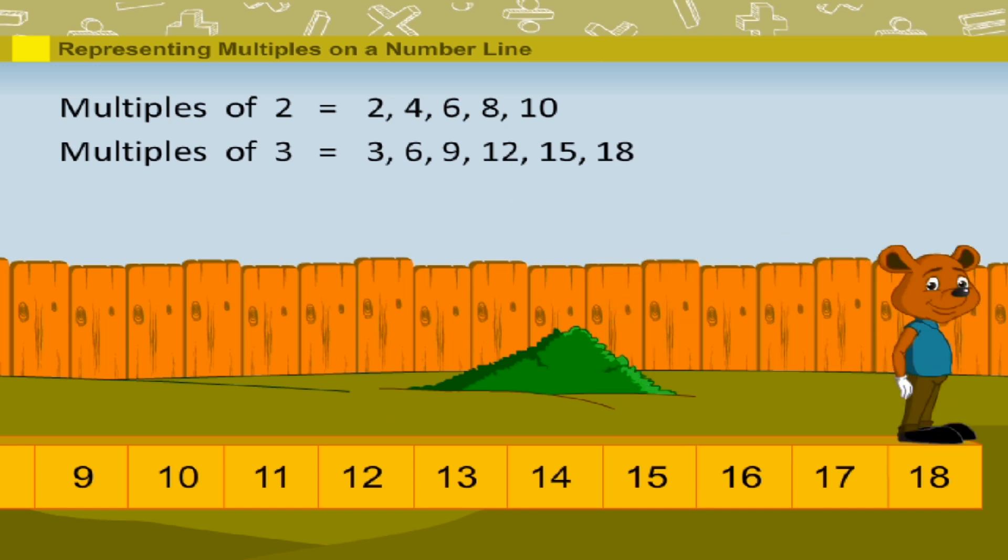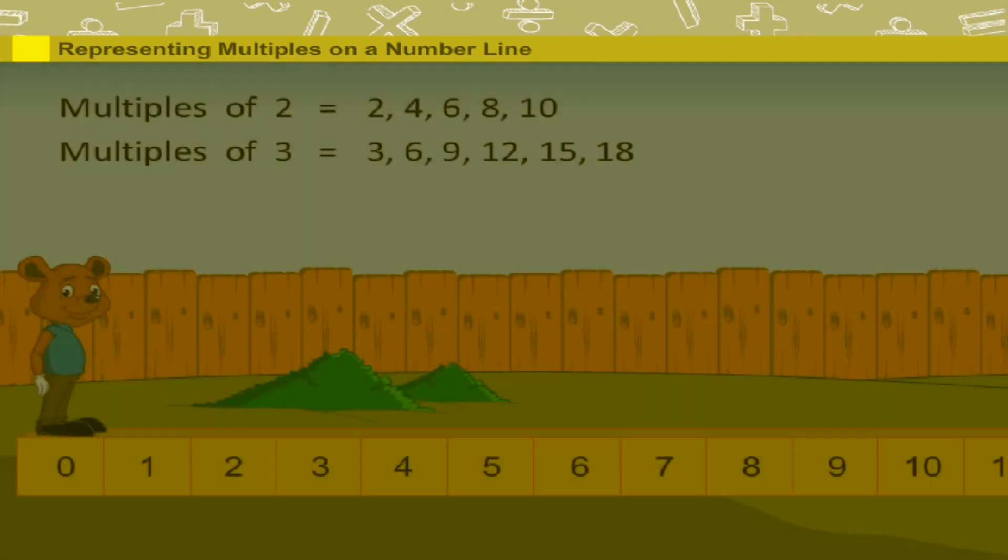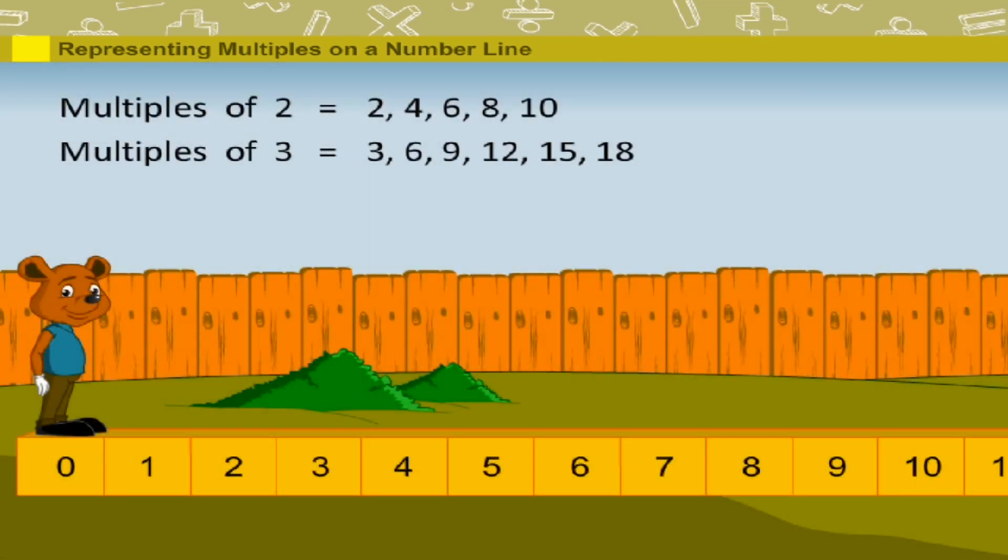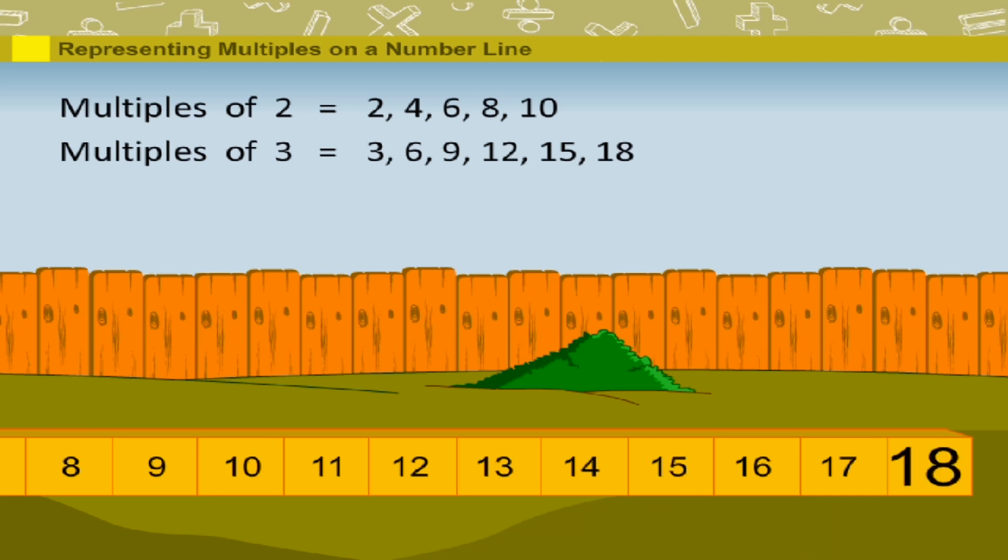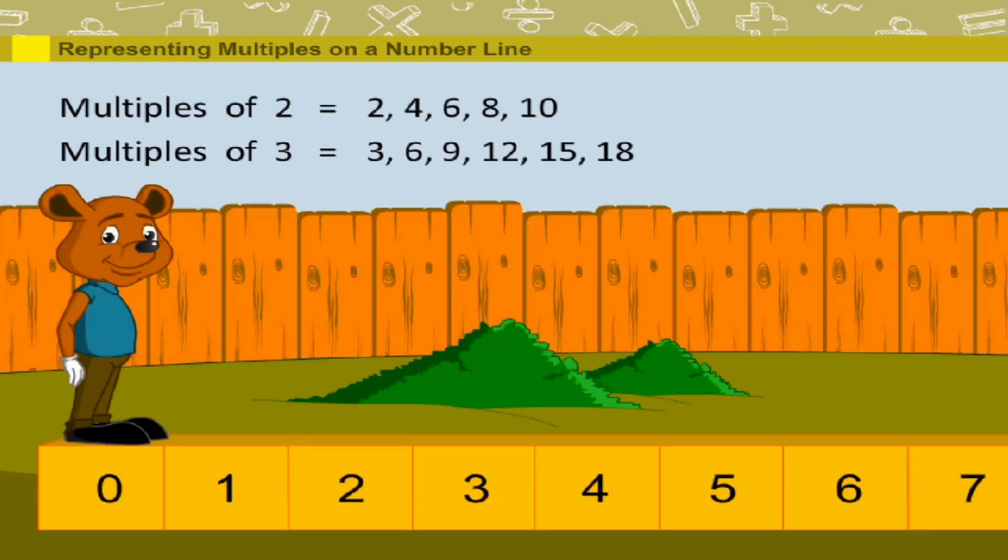Robbie has shown us how multiples are worked on the number line. Firstly, Robbie worked out two, four, six, eight, ten. And next, three, six, nine, twelve, fifteen, eighteen. Nice work, Robbie.